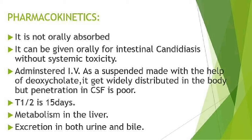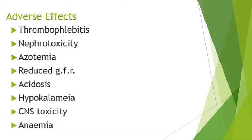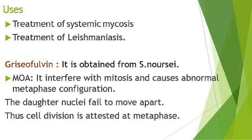Adverse effects of amphotericin B include thrombophlebitis, nephrotoxicity, azotemia, reduced glomerular filtration rate, acidosis, hypokalemia, neurotoxicity, and anemia. Its uses include treatment of systemic mycosis and treatment of leishmaniasis.